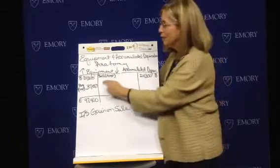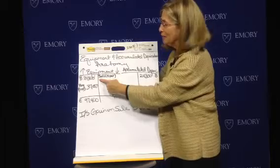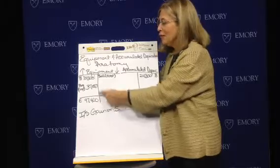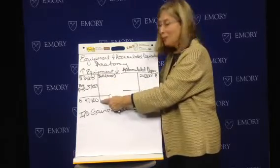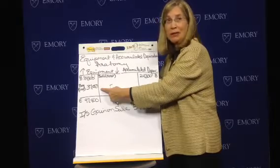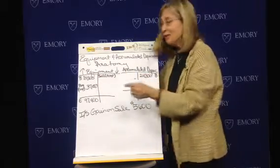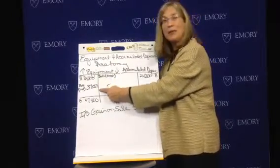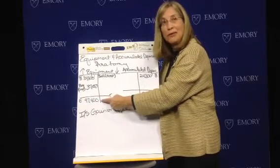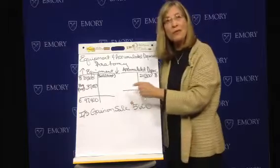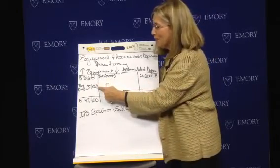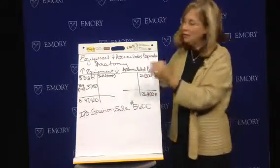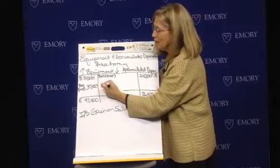Here are the facts. We see a beginning balance of $84,800 and an ending balance of $97,400. Because the account went up, we know we bought property, plant, and equipment. The facts tell us we bought equipment for $37,000. But if I add the beginning balance plus what we bought, it does not equal the ending balance. So we must have sold something as well. Adding the debits and subtracting the ending balance, I find that the cost of what I sold is $24,400.